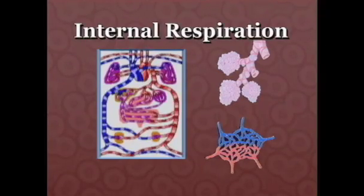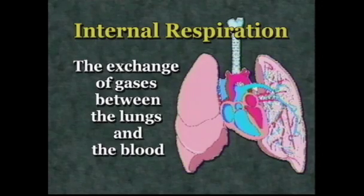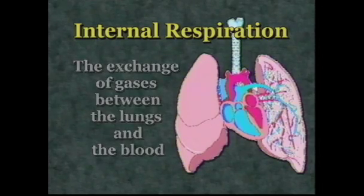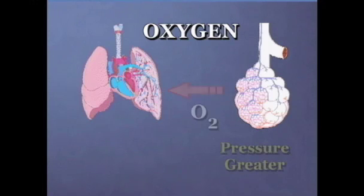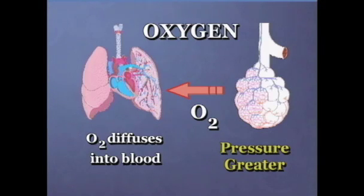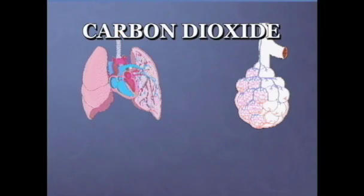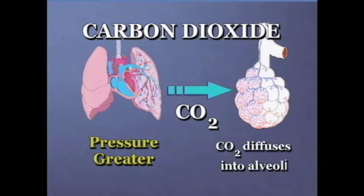This stage of gas exchange is known as internal respiration — the exchange of gases between the lungs and the blood. The principle of Graham's Law also applies here. If within the alveoli the pressure of oxygen is higher than the pressure of oxygen returning from the cells via the circulatory system, then oxygen will be diffused into the blood. The same applies to carbon dioxide: if its pressure is lower in the alveoli than in blood returning from the cells, then carbon dioxide will diffuse into the lungs to be expelled.